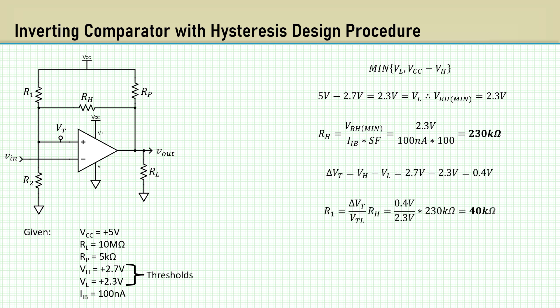Delta VT is 0.4 volts. That gives us 40K for R1. And with no surprise due to the symmetry, R2 is also 40K.